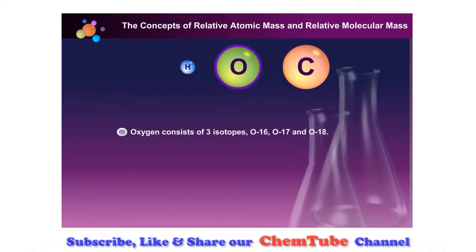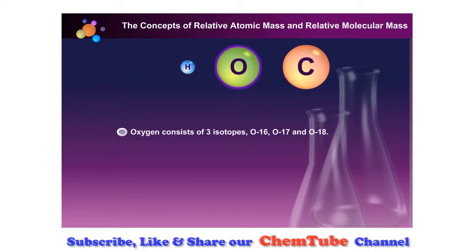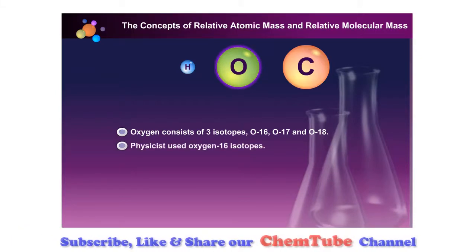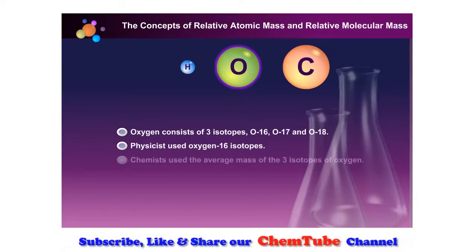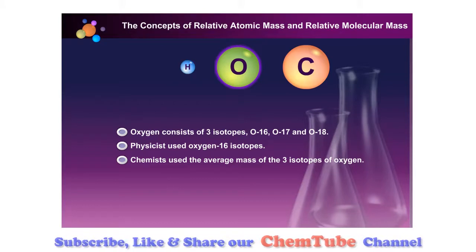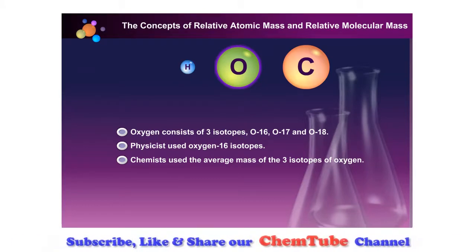Oxygen consists of three isotopes: oxygen-16, oxygen-17, and oxygen-18. Physicists used the oxygen-16 isotope as a standard, whereas chemists used the average mass of the three isotopes of oxygen as the standard. Due to this, two scales of relative atomic mass of atoms existed.